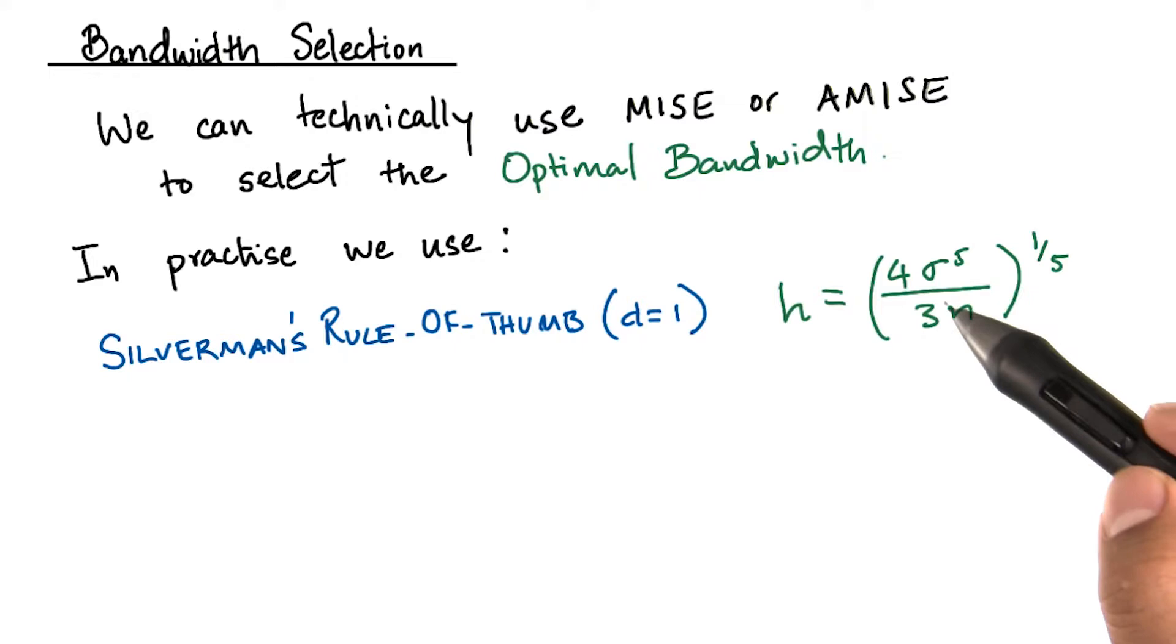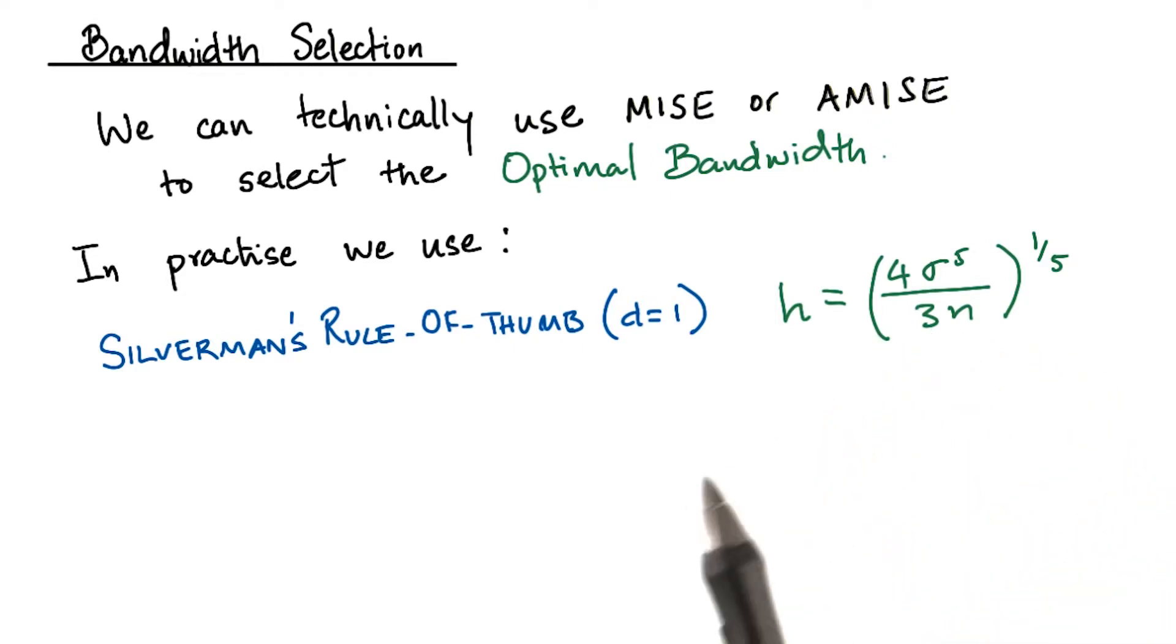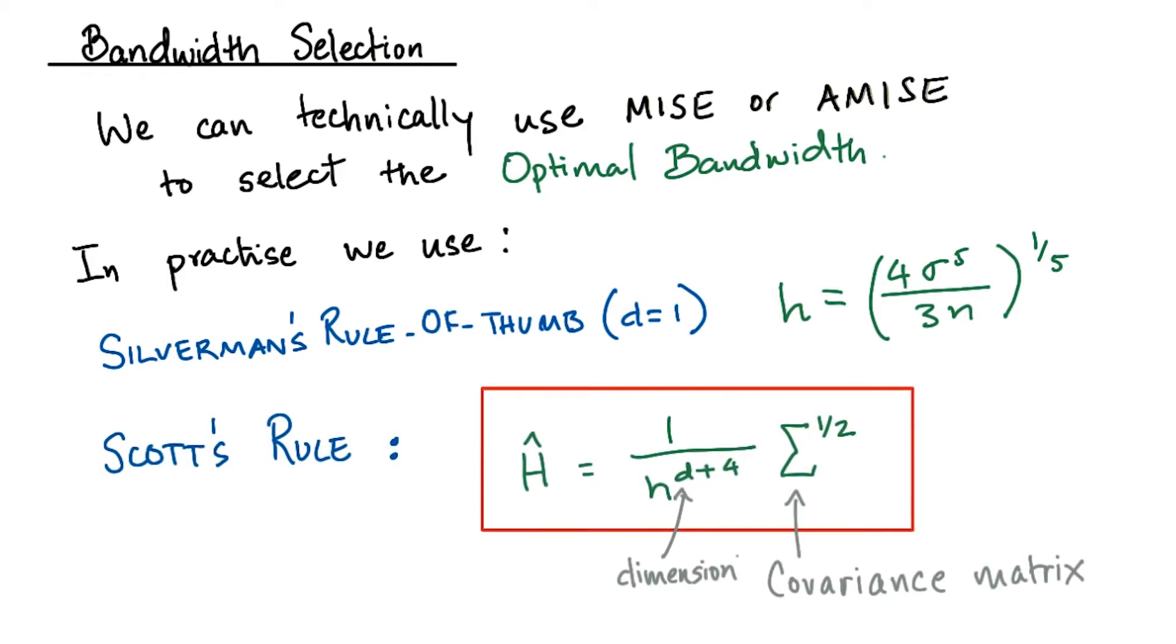In this case, sigma is the standard deviation of the distribution. In this case, the kernel is also assumed to be Gaussian.